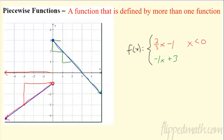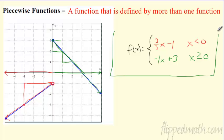But as soon as it hits zero, it changes to the green function. So every x that is positive over here is this green line. Every x greater than or equal to zero — because I had that solid dot — makes that green function. So really, this is what a piecewise function looks like. It's f(x) broken into two or more functions, and we have to define the interval where each function exists.